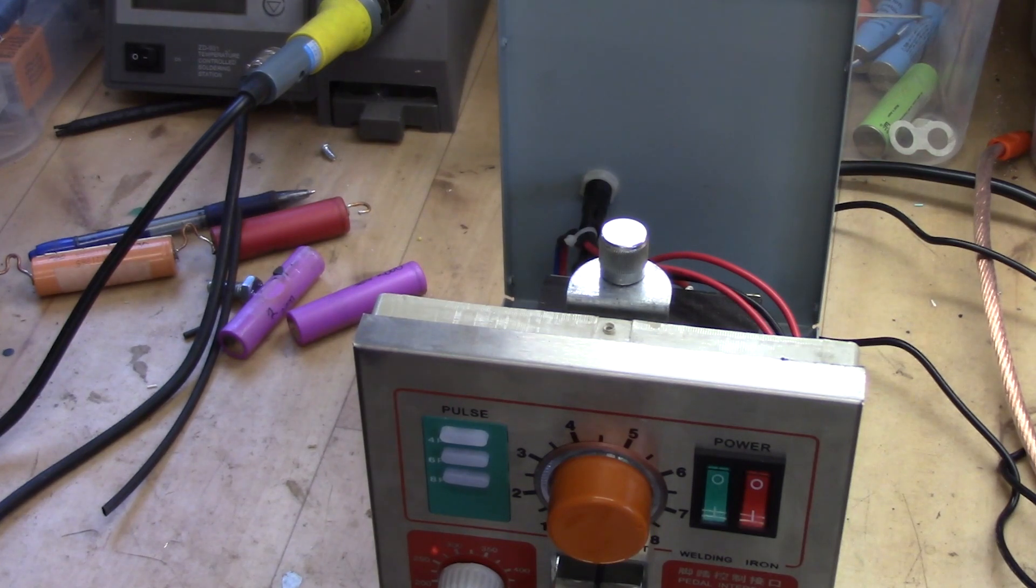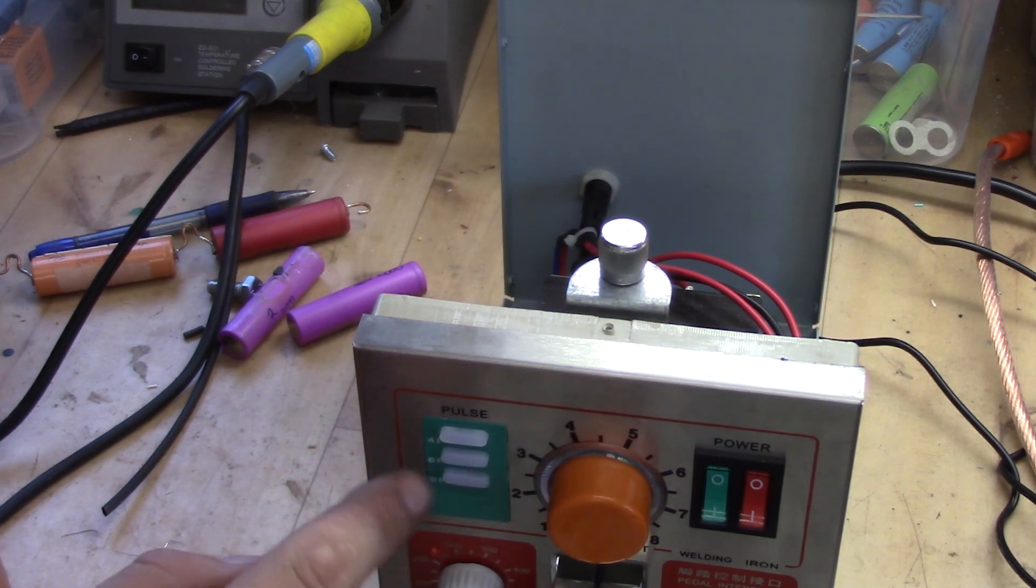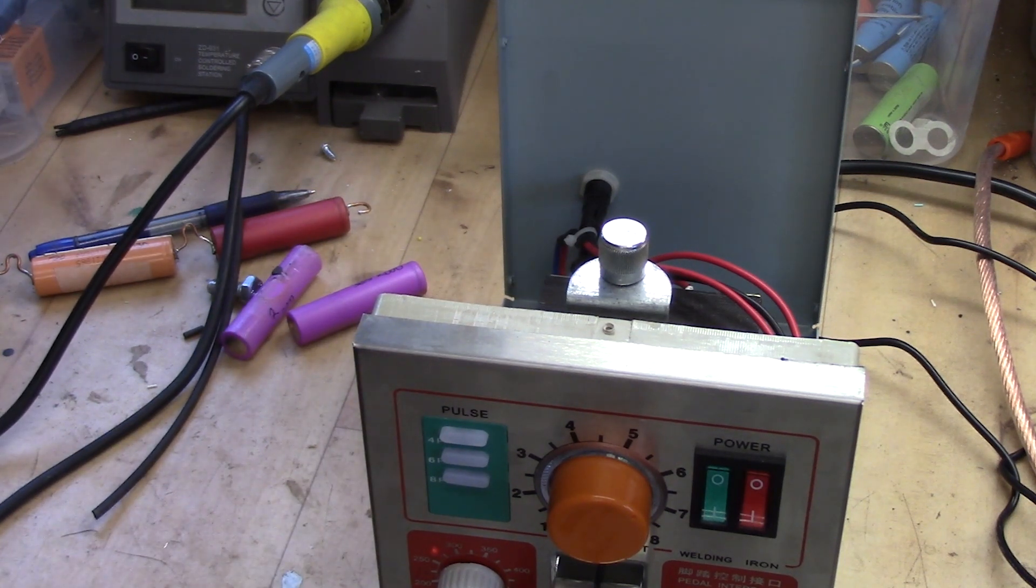So what you have here, this pot here determines the length of the pulse. And this one determines the number of pulses in a row that is done. This is a rather simple device but it do work.